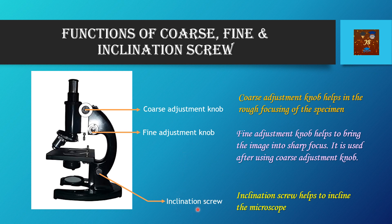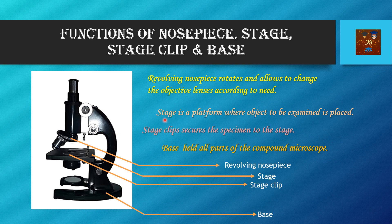Another part present here is the inclination screw or inclination knob, which helps to incline the microscope. Regarding the revolving nose piece, it is situated attached to the body tube and it holds the objective lenses. It revolves so that different objective lenses on the nose piece can be brought over the specimen and we can see it through the eyepiece.